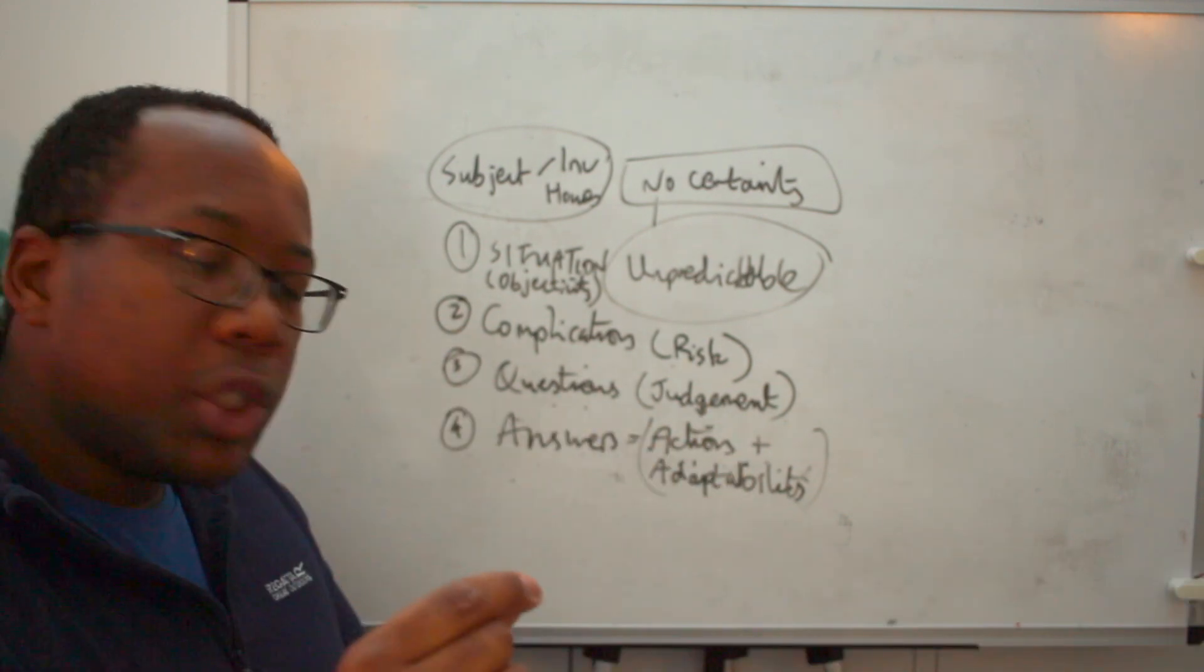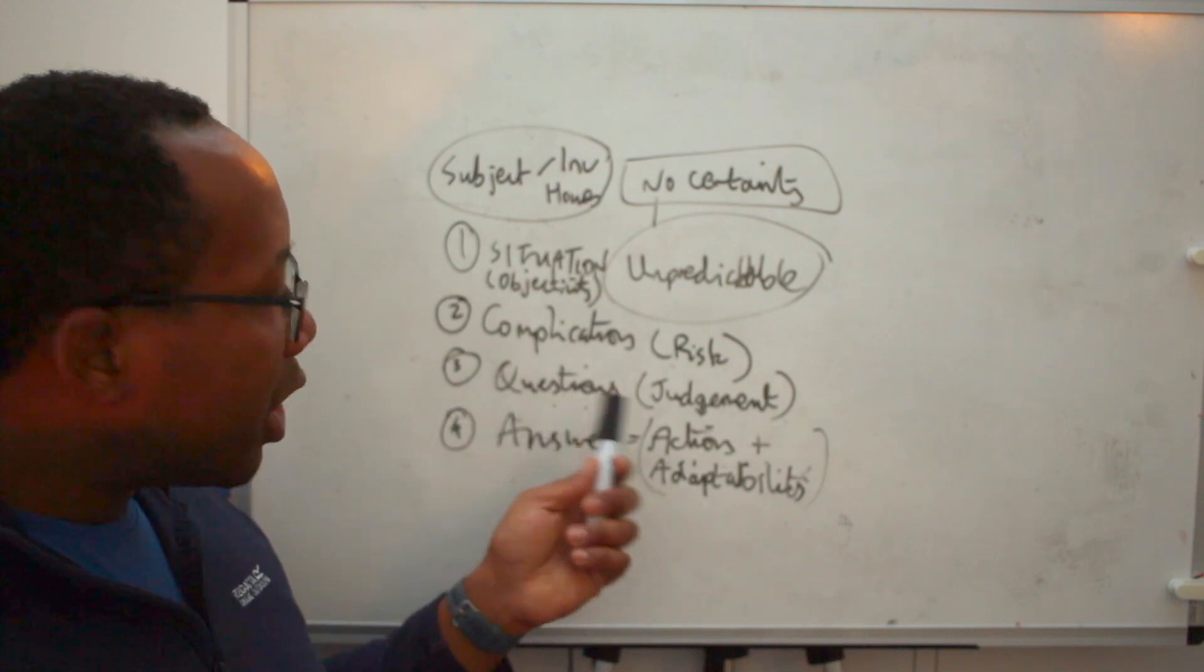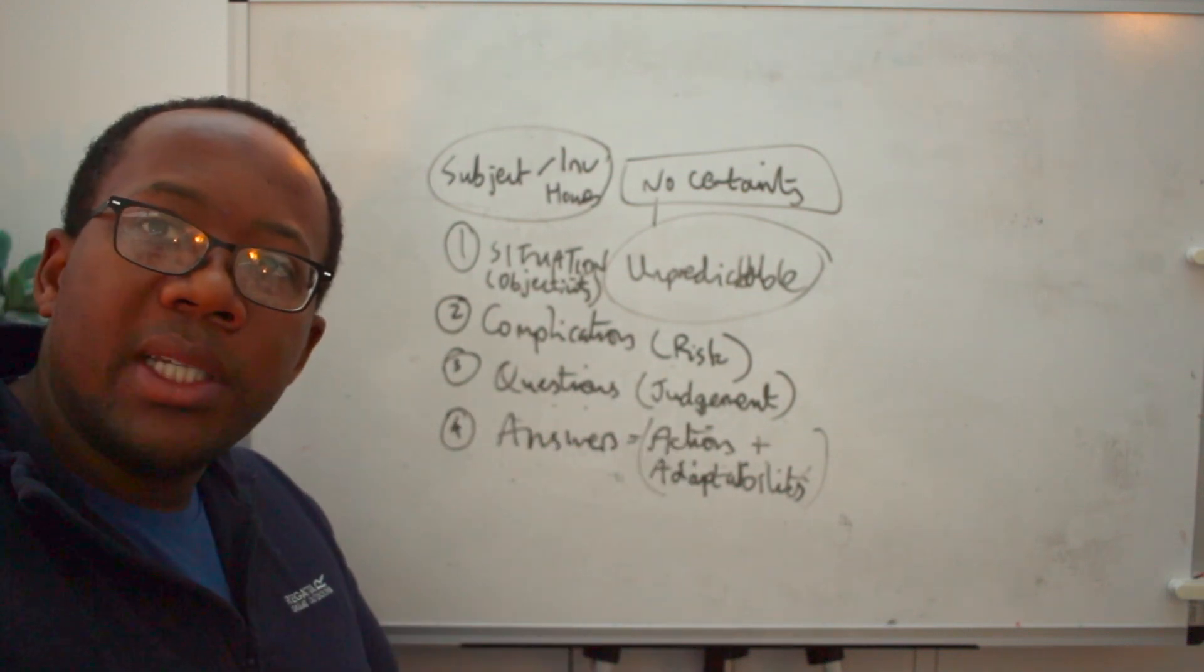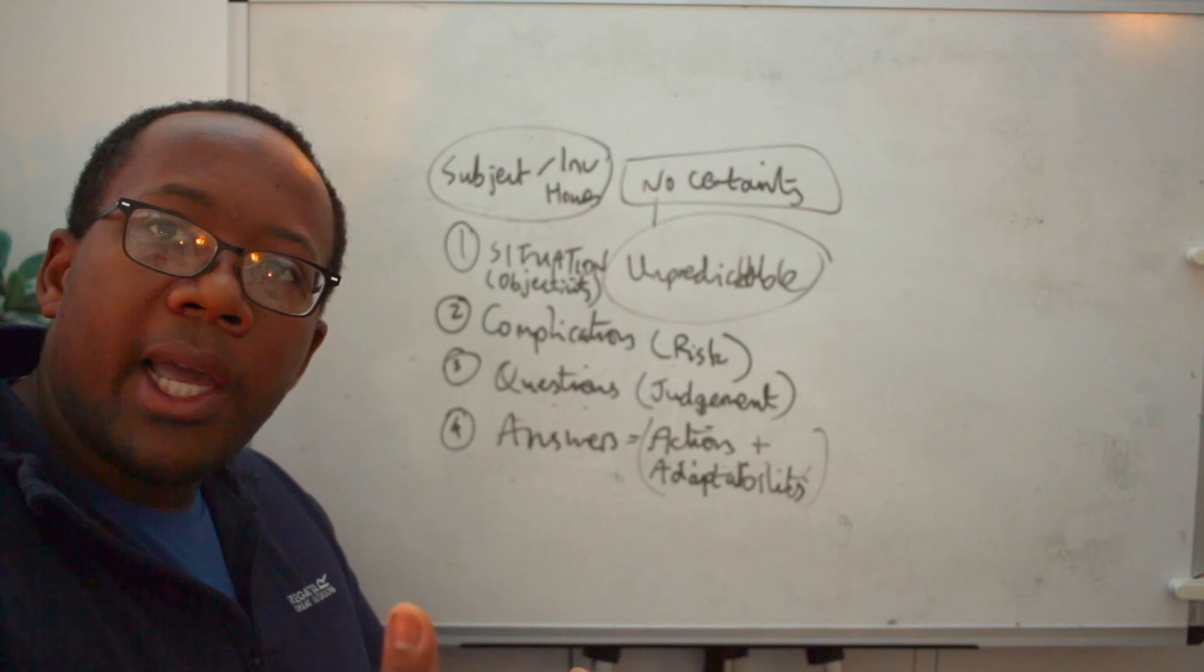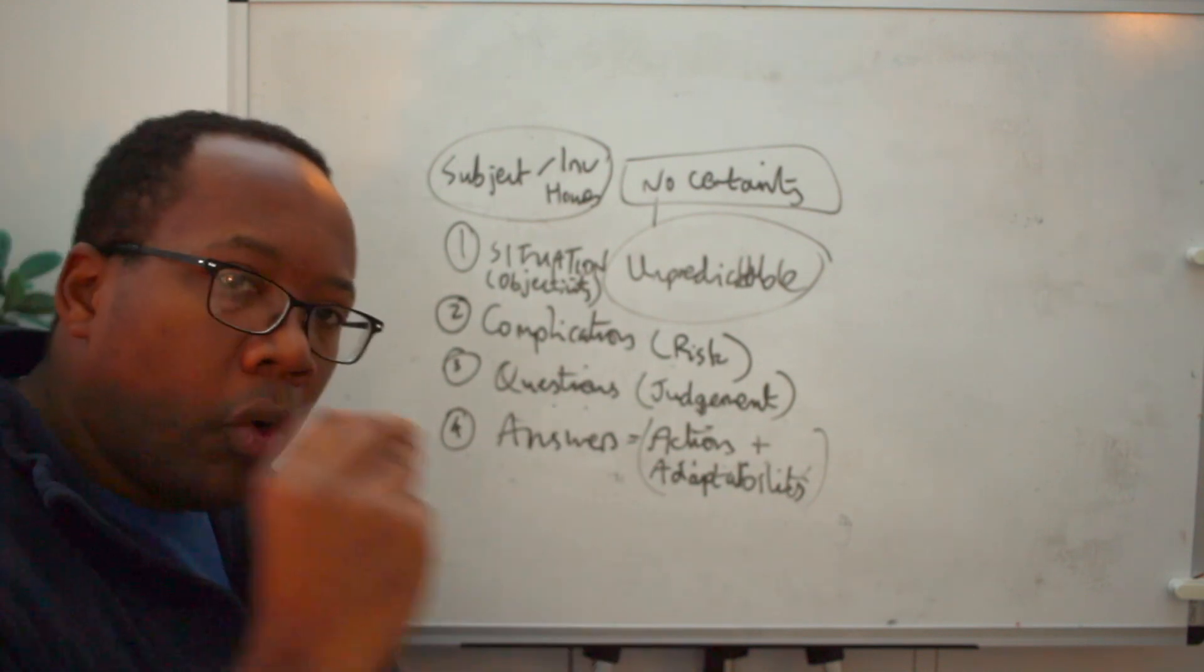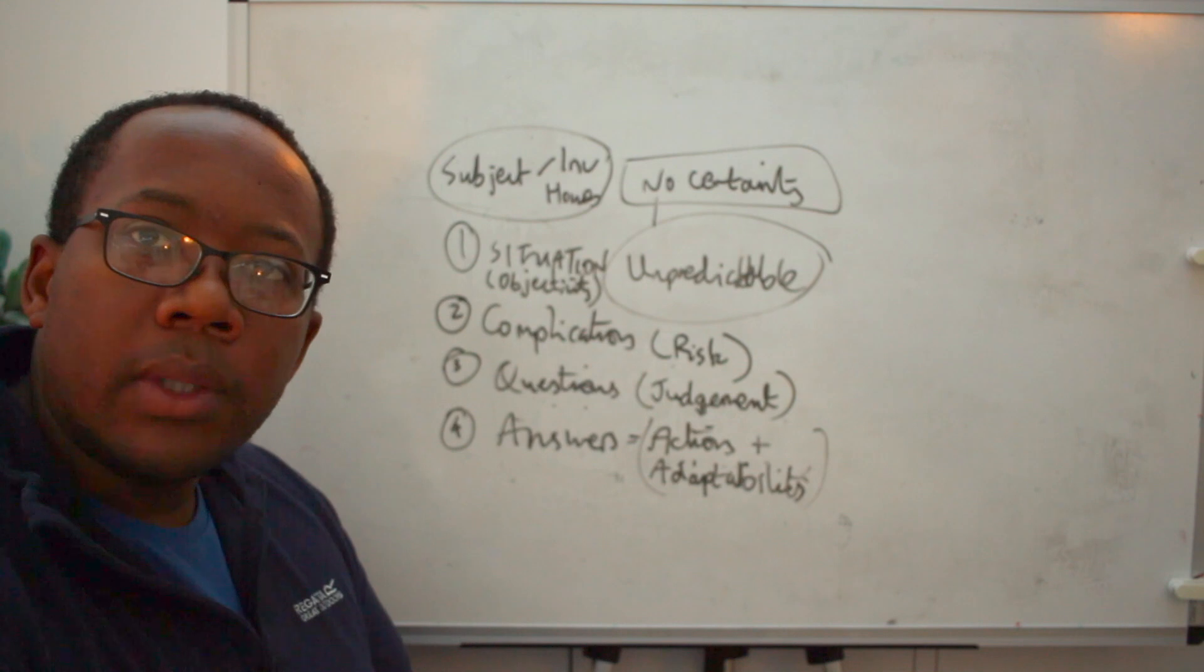Number two is assessing your risk. Look at the complications, understand the risks around the situation. These are the things you're going to have to manage. Number three is ask great questions to help you work through the gray areas, work through the things you're not certain of. And number four is have some actions and be willing to adapt.